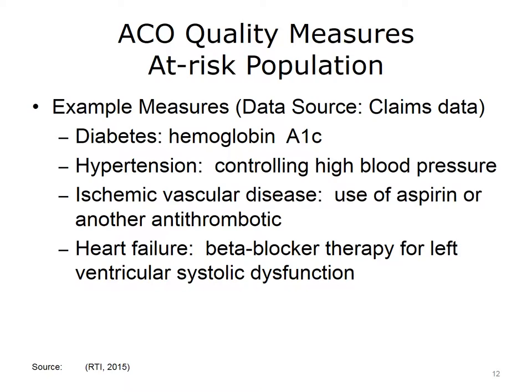The at-risk population domain includes eight measures focused on ACO patients in the following at-risk populations: coronary artery disease, diabetes, heart failure, hypertension, ischemic vascular disease, and mental health. In each at-risk population, there are measures of various patient care processes and outcomes. These measures are intended to keep ACOs focused on improving the clinical care of patients with these diseases and are collected through claims data.